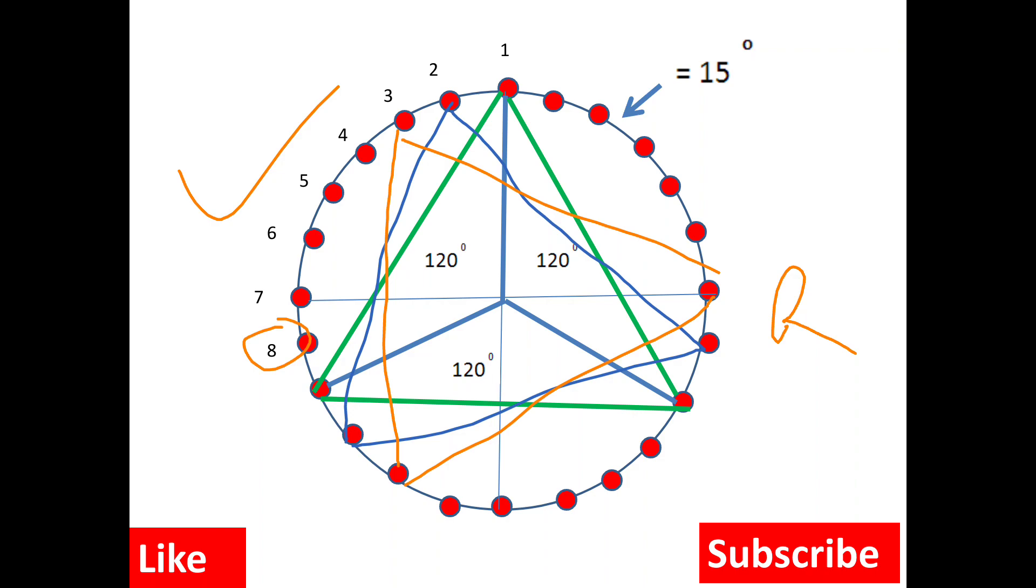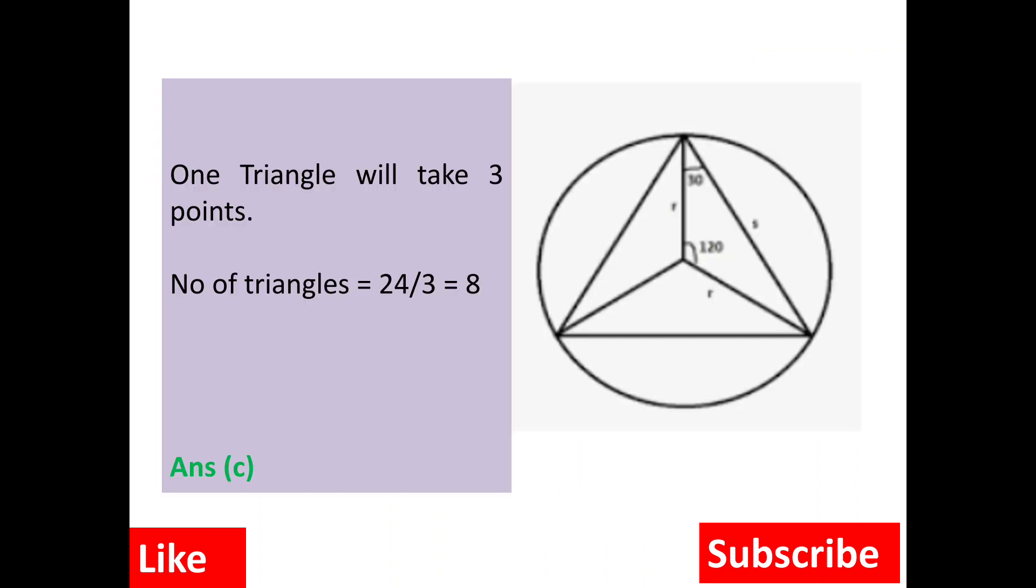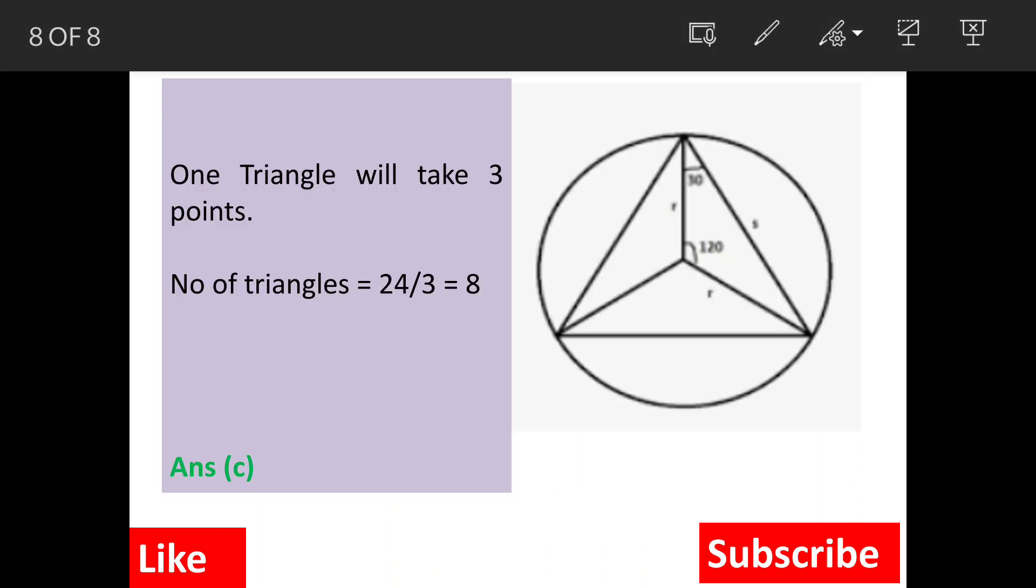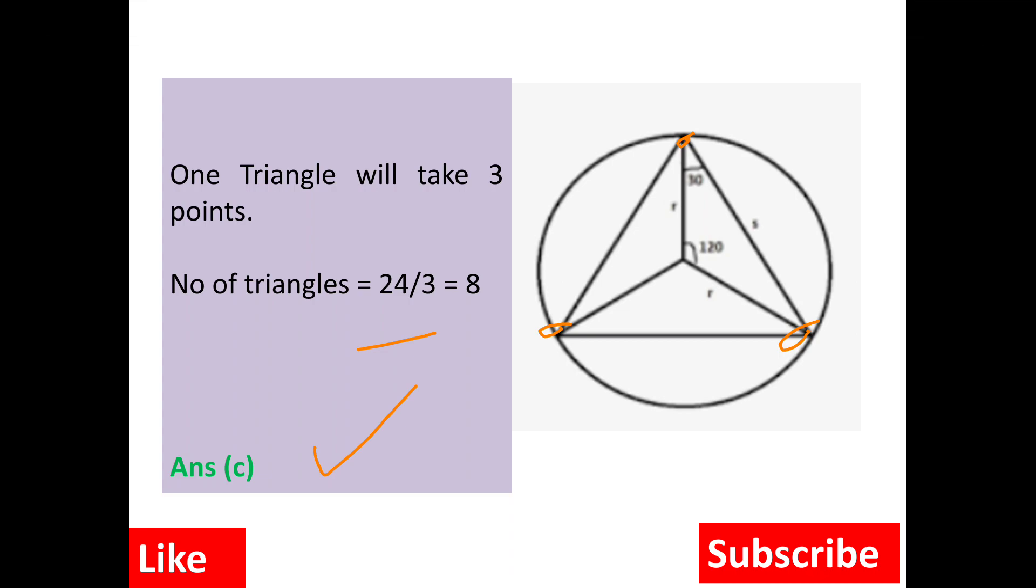The answer is option C: eight. You can see this calculation again - 24 points divided by three points per triangle gives us maximum eight triangles.